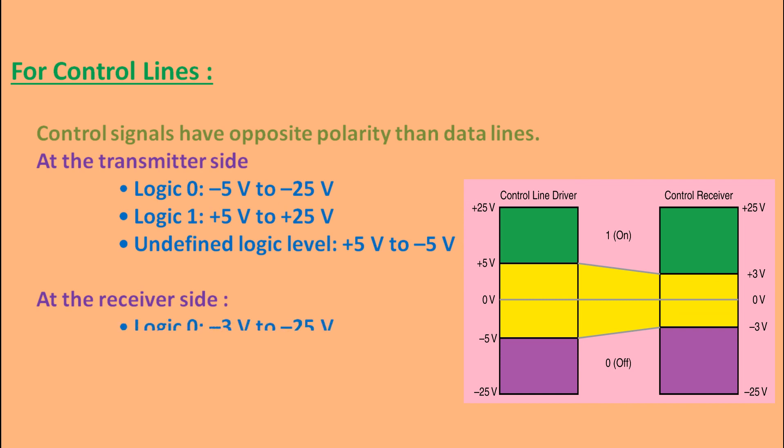At the receiver side, minus 3V to minus 25V is considered as logic 0, plus 3V to plus 25V is considered as logic 1, whereas plus 3V to minus 3V is considered as undefined logic label.